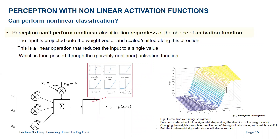Before continuing, I want to be clear: if you take a perceptron and add an activation function, you are NOT able to solve a non-linear problem. With a perceptron, even with an activation function, you cannot solve a non-linearly separable problem. If you see a perceptron with logistic sigmoid, when you learn by changing the weights you might change the direction or stretch the surface, but the shape remains the same — you're still dealing with a linear classifier.